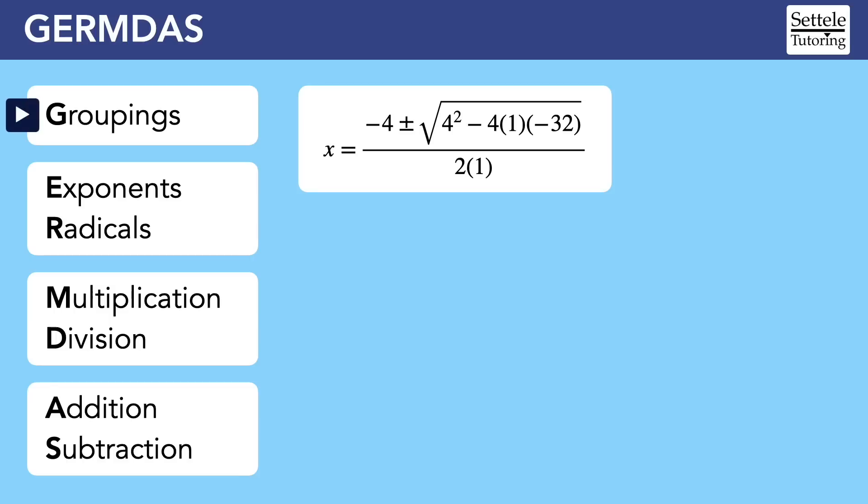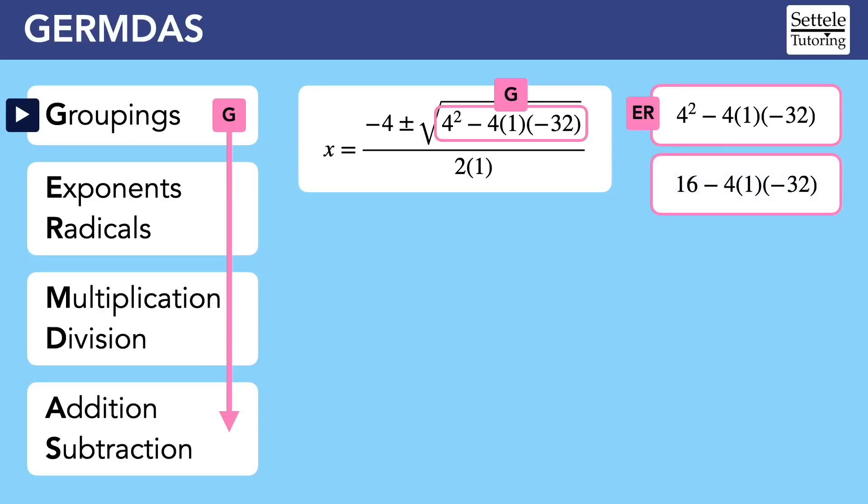We should start by looking for groupings, and there's a big one underneath the radical. We should treat this like its own mini expression, and it will get its own mini GERMDAS. Are there any exponents or radicals? Yes, we can square the 4 to get 16.